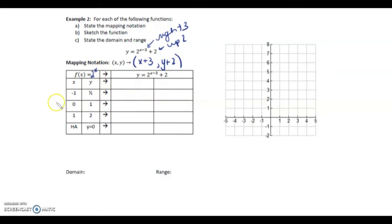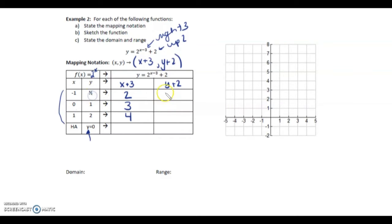With the base graph of 2 to the x, I only took into account x equals negative 1, 0, and 1 — that's enough to see where the graph is going and the end behaviors. The horizontal asymptote of the original is y equals 0. Let's add 3 to the x's: negative 1 plus 3, 0 plus 3, 1 plus 3. And every y value we add 2: one-half plus 2 gives 2.5; 1 plus 2 gives 3; 2 plus 2 gives 4. Our new horizontal asymptote: take that 0 and add 2, so y equals 2.